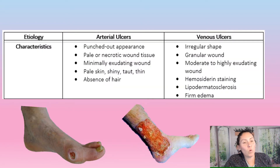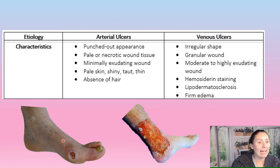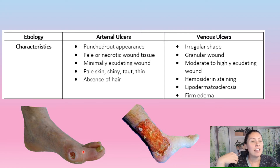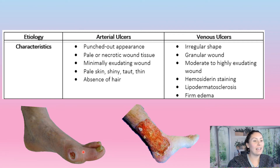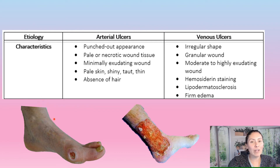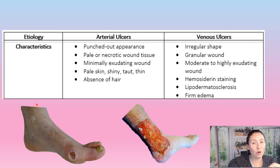Now we'll get into the etiology and what it actually looks like to have an arterial ulcer. The arterial ulcer has that very punched-out appearance — it looks like the skin has just been removed from that area. The wound tissue is very pale, it can be necrotic, and there's minimal exudate. The surrounding skin is pale, shiny, taut, and thin, with an absence of hair. With arterial ulcers, you have to ask if the patient regularly has hair on their legs, because there will be no hair or very minimal hair present with arterial disease.